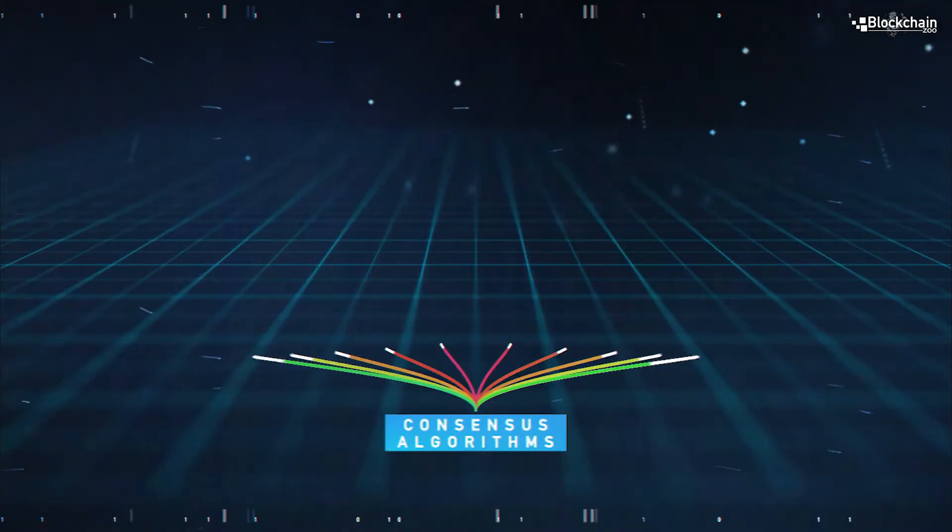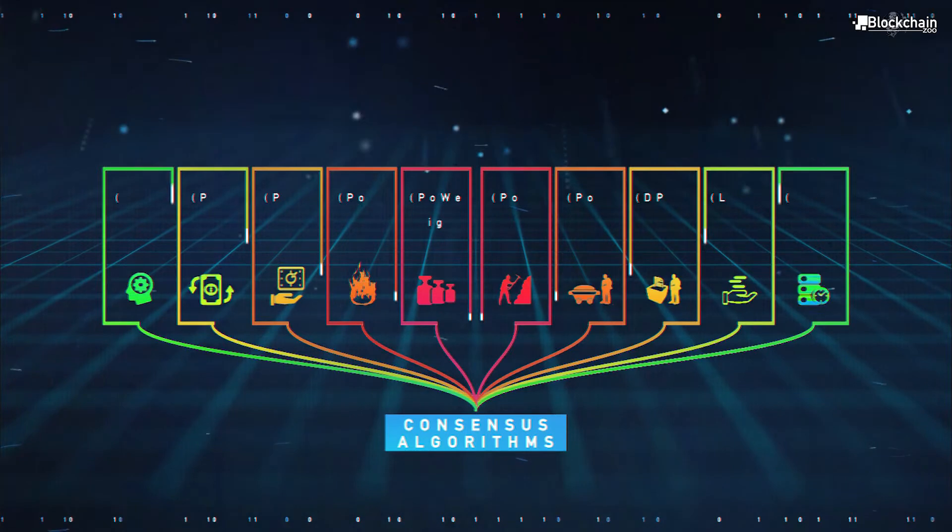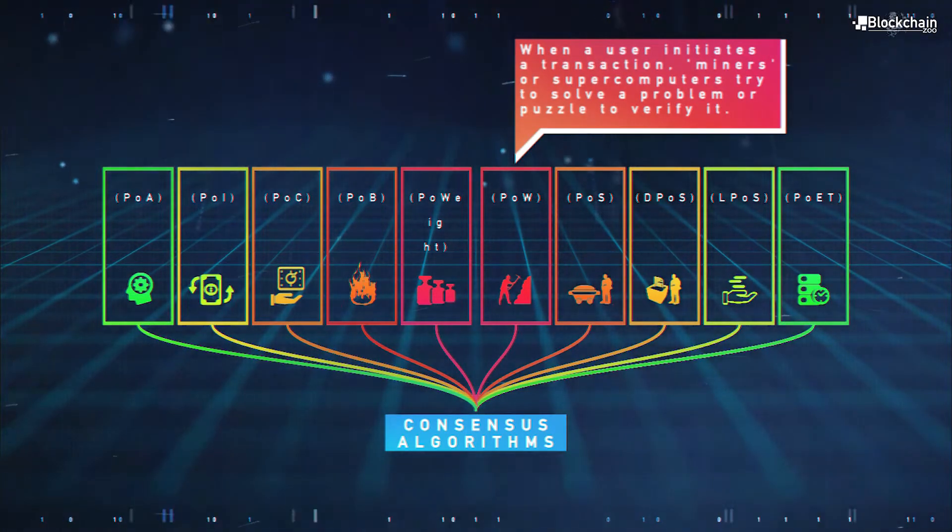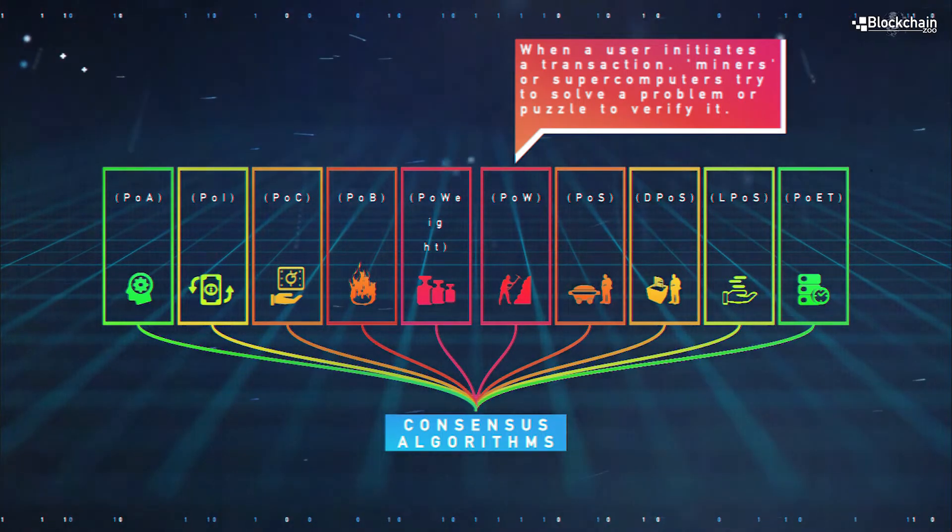There's many types of consensus algorithms that have been developed. The very first was called proof of work, which requires computers to use a lot of processing power, and the amount of processing power they use constitutes the amount of voting power they have in the network.